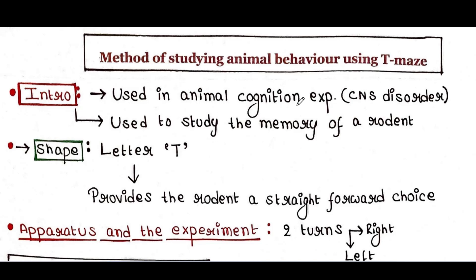It is shaped like the letter T, providing the rodent with a straightforward choice.